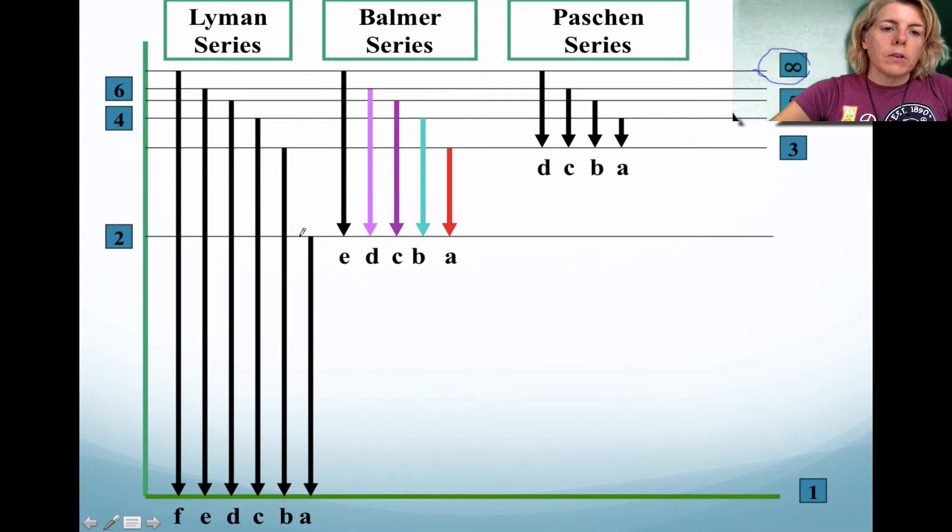Notice that the Lyman series probably has the greatest amount of energy, and that's partially because the spacing between the different energy levels is greater.